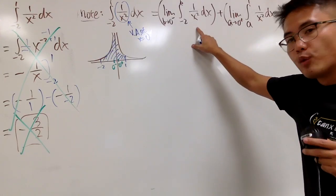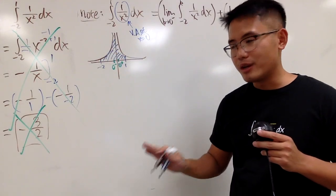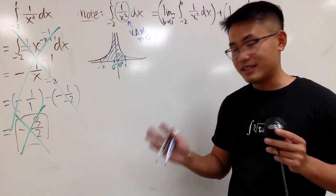But, if one of the limits right here diverges. Then, D.O. You can just say diverge. That's it. Right?